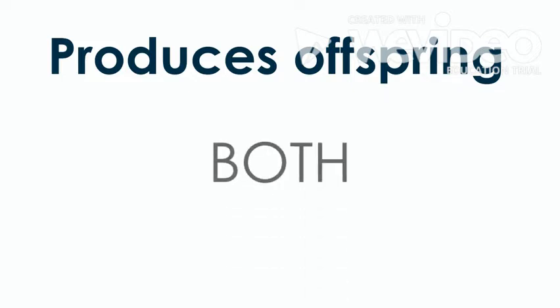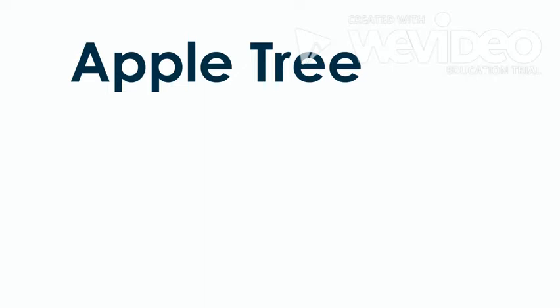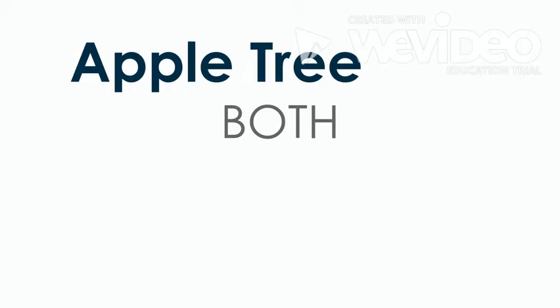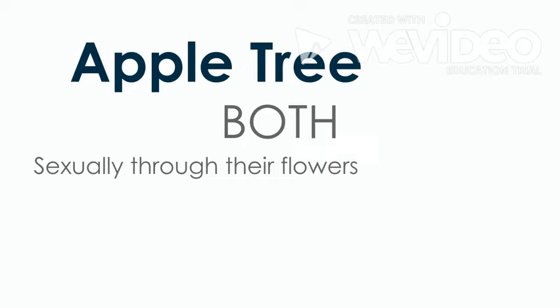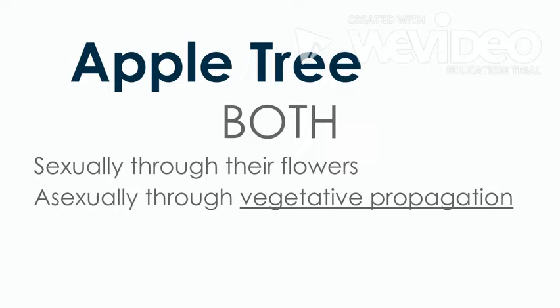Can you produce offspring both sexually or asexually? Yes — both. Now, apple trees: do they reproduce sexually, asexually, or both? Usually in class this is where I'd have you raise your hands, and I'd probably tell you all that you're wrong — because they reproduce both ways. They reproduce sexually through their flowers, and we talked before about how flowers are sexual organs. They also reproduce asexually through a thing called vegetative propagation — write that down. That's usually a good clue when something is underlined.